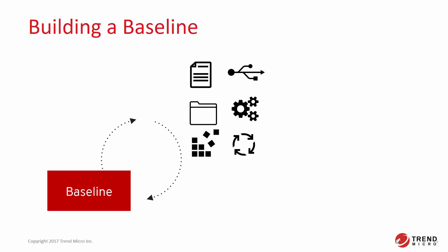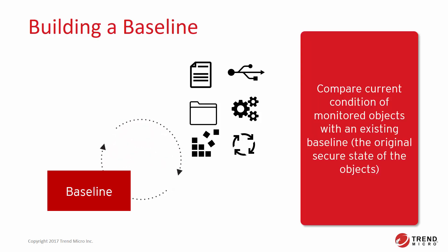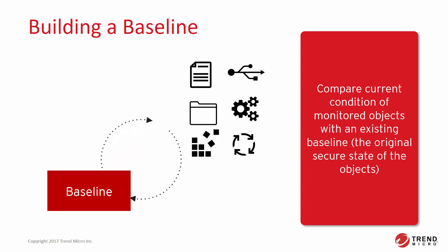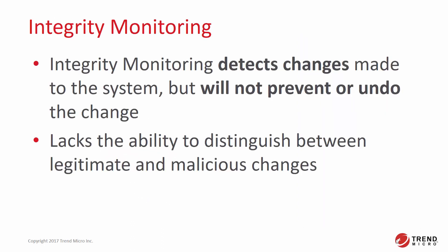When the Integrity Monitoring Protection module is enabled, a baseline configuration of the system will be generated and the objects identified with appropriate rules will be monitored. The Deep Security Agent will compare the current condition of the monitored objects with the baseline, which indicates the original secure status of these objects. Any detected changes will be forwarded to the Deep Security Manager for display in events. It is important to note that Integrity Monitoring will detect any changes but lacks the ability to distinguish between legitimate and malicious changes, and the Protection Module will not be able to prevent or undo these changes.